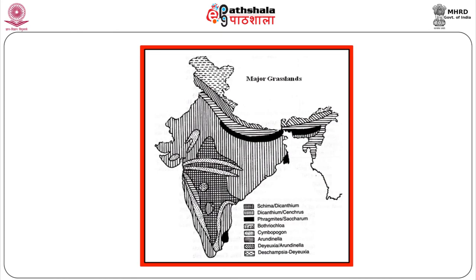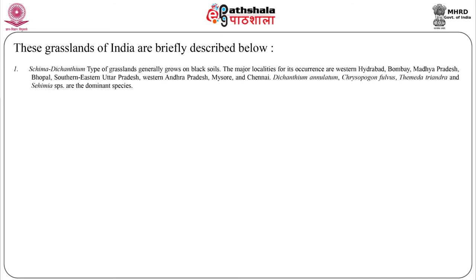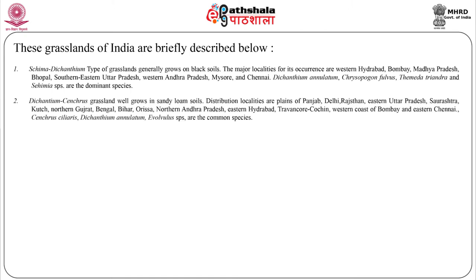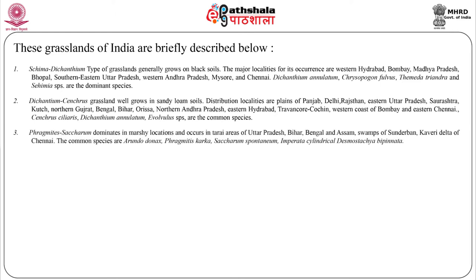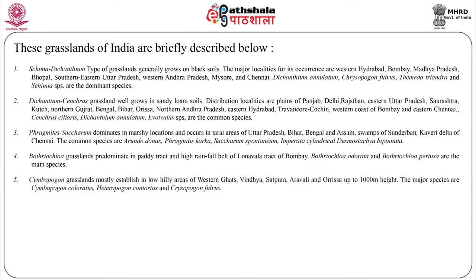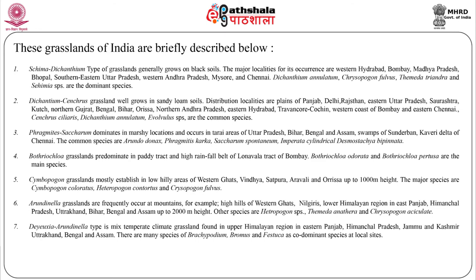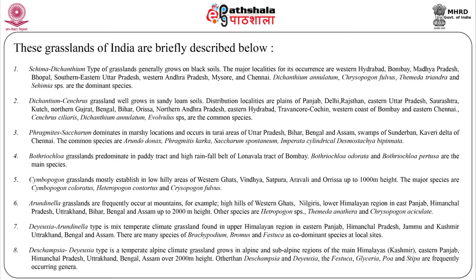In this slide we can see the distribution of major grasslands in India. White in 1957 classified Indian grasslands into 8 types. These grasslands are briefly described and indicated in this slide. The first one is Sehima-Dichanthium type of grasslands. The second is Dichanthium-Cenchrus grasslands. Third is Phragmites-Saccharum, which dominates in marshy locations. The fourth is Bothriochloa grasslands. Fifth is Cymbopogon grasslands. Sixth is Arundinella grasslands. Seventh is Desmostachya-Arundinella type of grasslands. The eighth is Deschampsia-Danthonia type of grasslands.